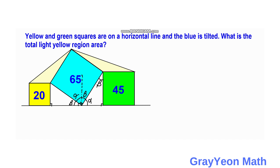The white portion between the blue square and the yellow square should be the complement of beta, which is alpha. If you draw a horizontal line from the yellow square, we form a right triangle where the angles are the complement of alpha, then alpha, then alpha, then beta.